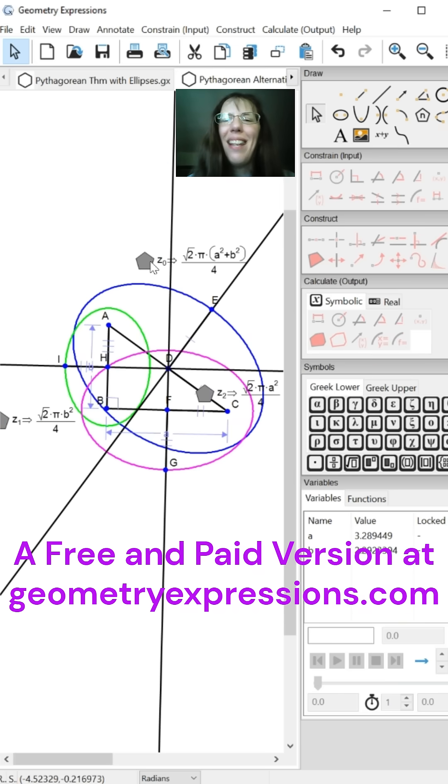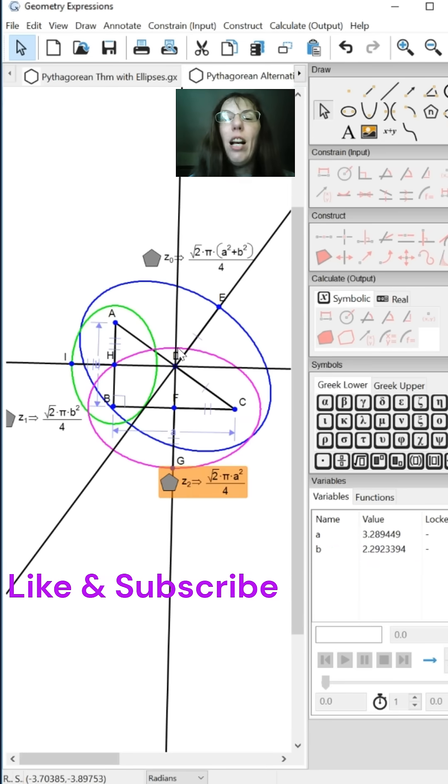Aha, yes. The sum of the area of the two smaller ellipses equals the area of the largest ellipse.